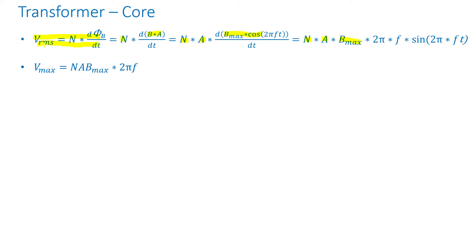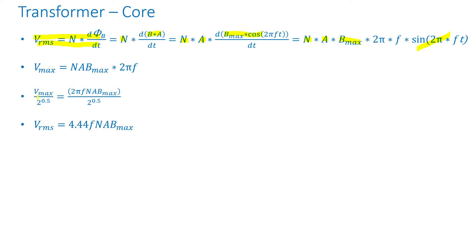This gives the RMS voltage. For the maximum voltage, I set the sine term to 1, so V_max equals number of turns times cross-section area times B_max times 2πf. Dividing both sides by the square root of 2, V_max divided by √2 equals 2πf times N times A times B_max divided by √2. Since for a sinusoidal voltage V_max divided by √2 is just V_rms, and 2π times 60 Hz divided by √2 gives 4.44, we arrive at 4.44 times f times N times A times B_max.